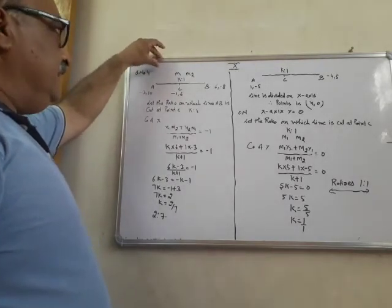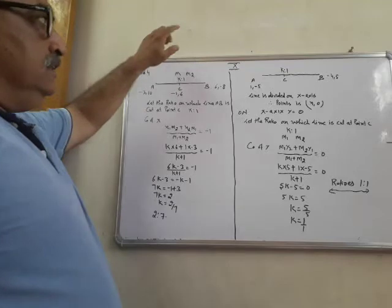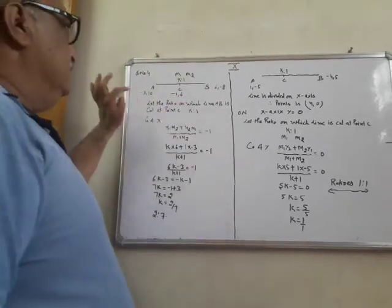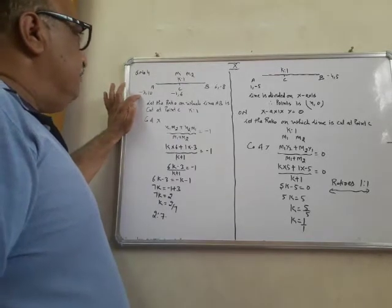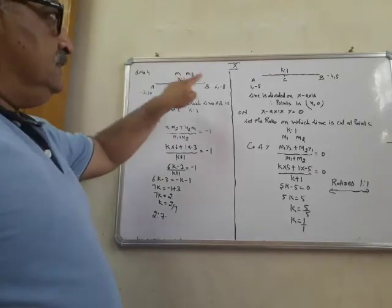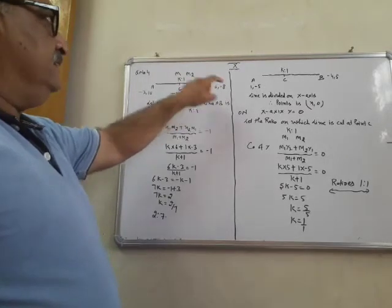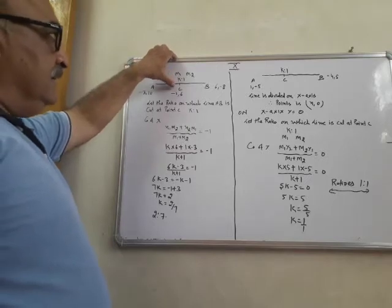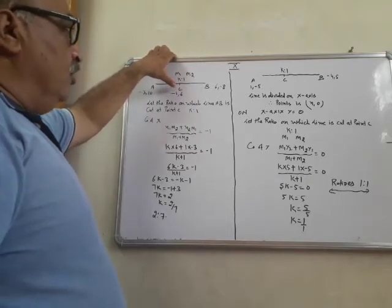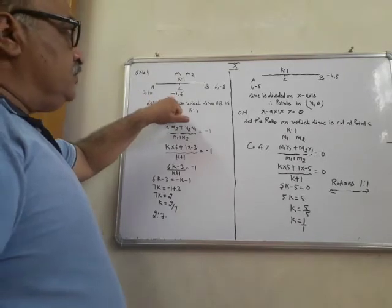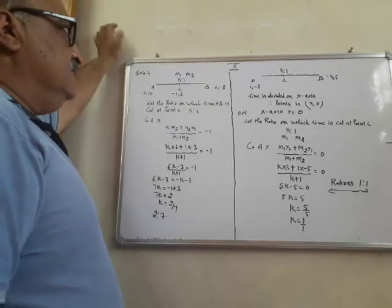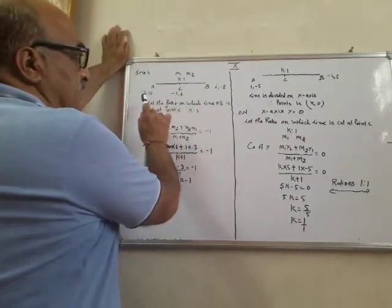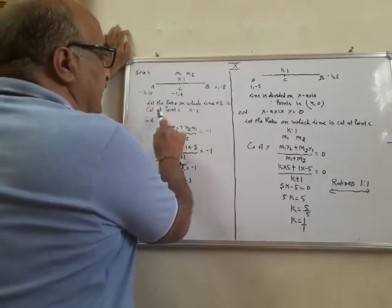Question number 4, question number 5. This is a line with points minus 3, 10 and 6, minus 8. This line is cut from point C, and this coordinate is minus 1 and 6. You have to find the ratio in which this line is divided at point C with coordinate minus 1.